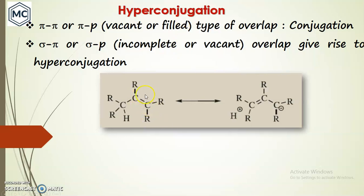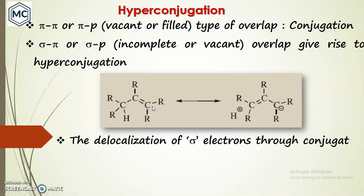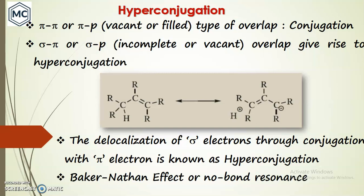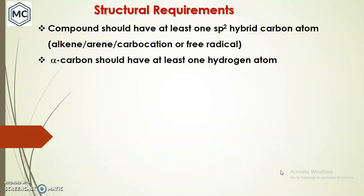In this example, there is a double bond and an alpha hydrogen atom. Hyperconjugation means the C–H sigma bond can interact with the pi bond and undergo delocalization. This delocalization of sigma electrons through conjugation with pi electrons is known as hyperconjugation. This effect was observed by Baker and Nathan. In this structure, the hydrogen is not attached to the carbon, so it is called no-bond resonance.